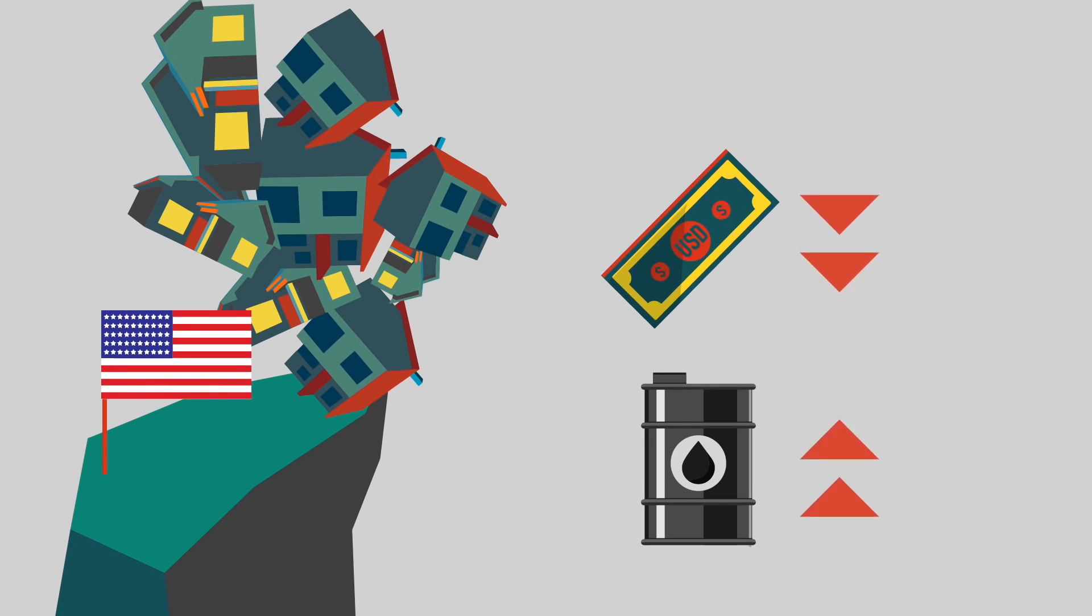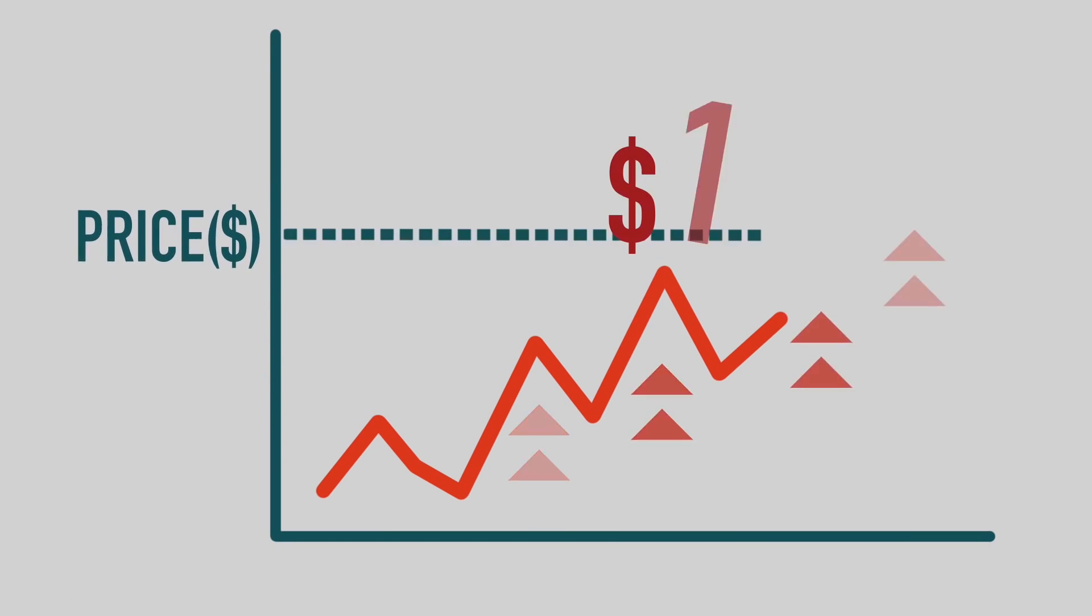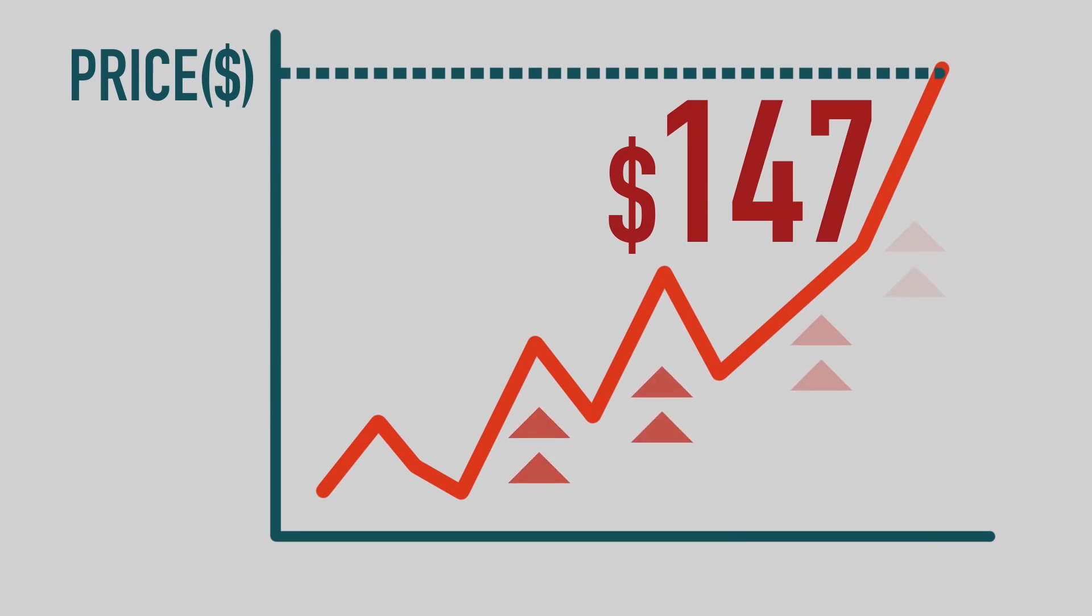For example, during the U.S. subprime crisis in 2007, the U.S. dollar depreciated combined with the energy crisis effect. Oil prices rose to a historic high, reaching $147 per barrel.